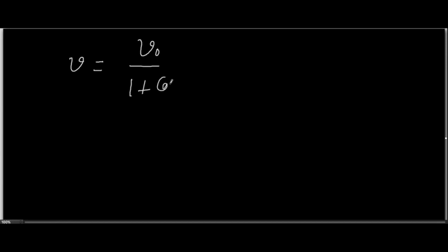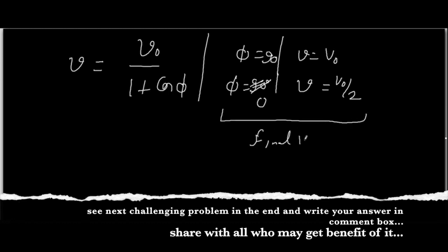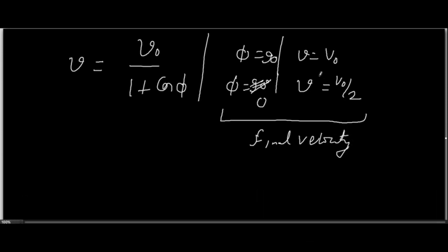Our final result is v = v₀ / (1 + cos φ). When φ = 90°, which is the initial condition, v = v₀. When φ = 0°, which is the minimum possible value of φ, v = v₀ / 2. This is the final velocity — also called the terminal velocity or critical velocity for this particular problem.